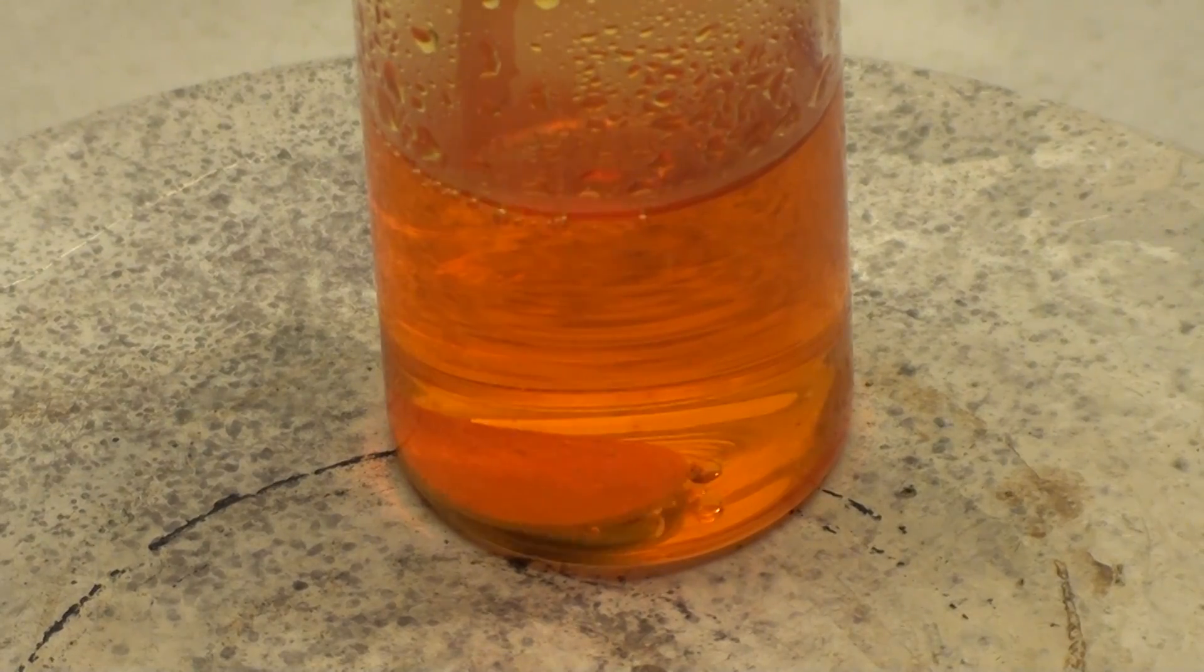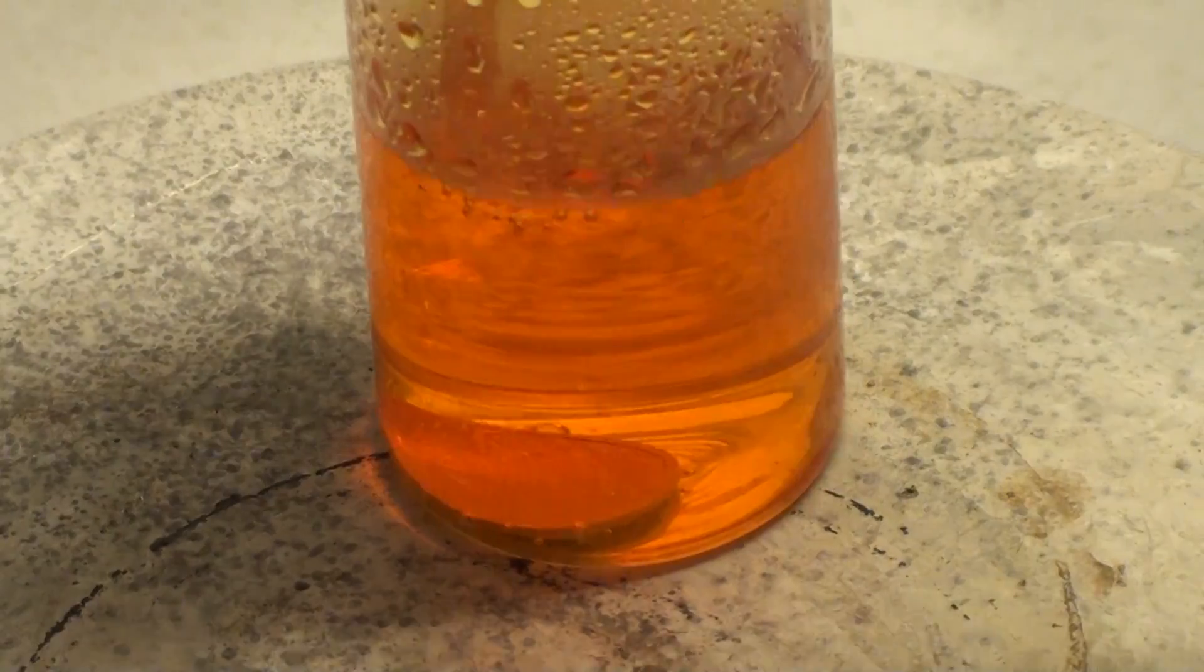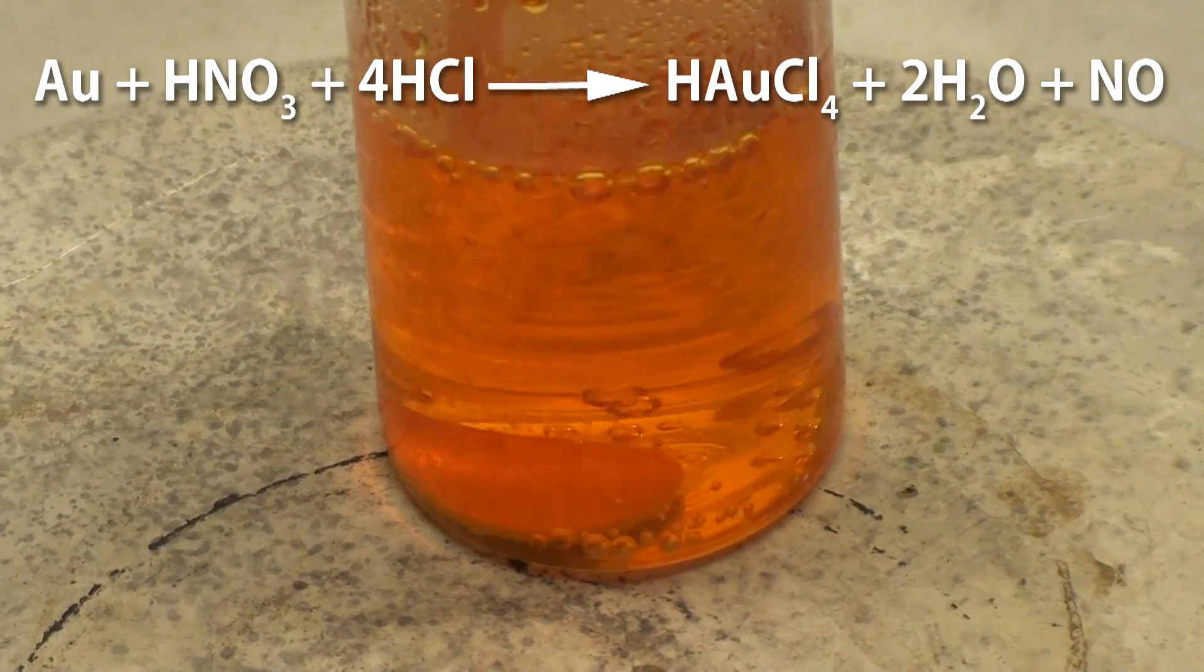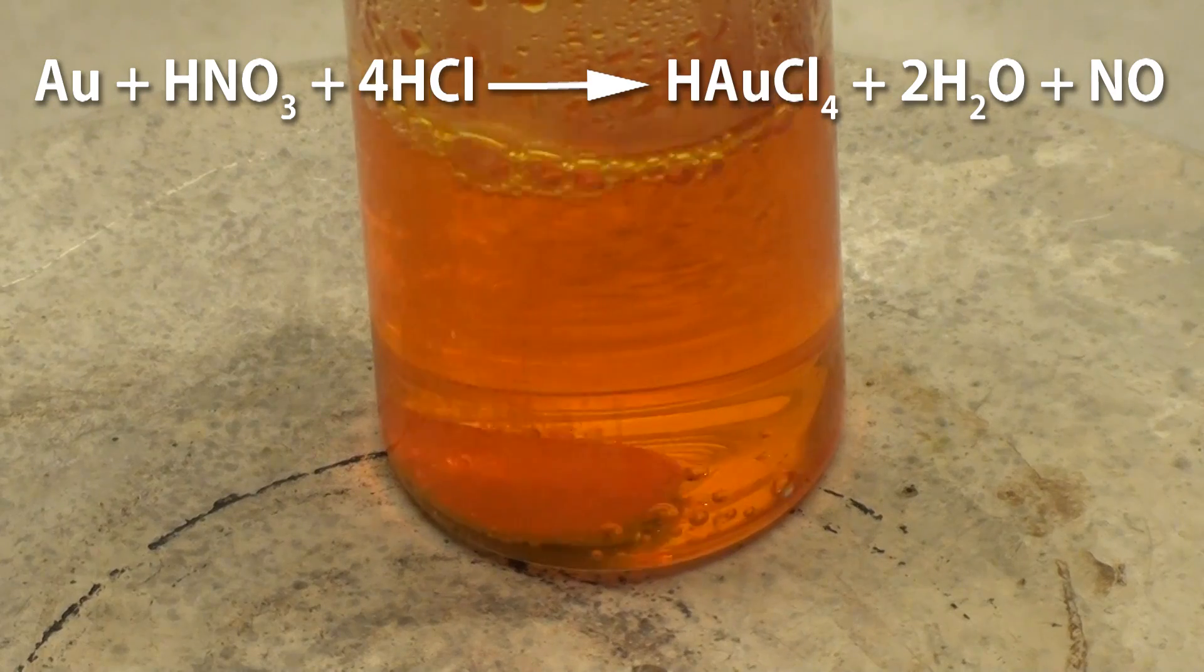Hmm, looks like the reaction is slowing down. I'm going to add another one milliliter of nitric acid. Overall what we're producing in this reaction is chloro-auric acid.